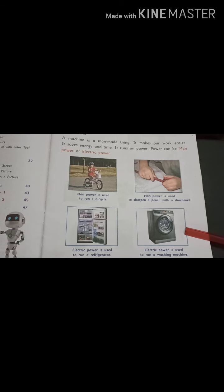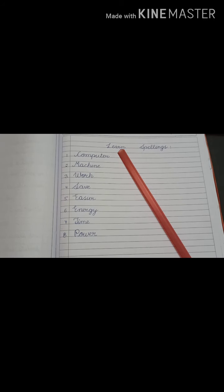Now, here you can see, it's a washing machine. Everyone of us has a washing machine at home. So, electric power is used to run a washing machine. What is used here? Electric power. As, washing machine runs with electricity.